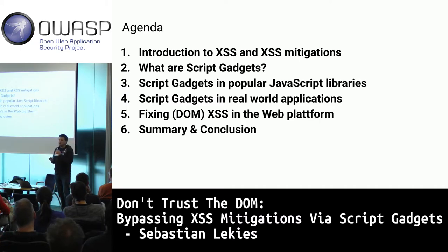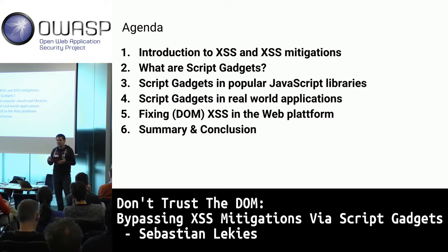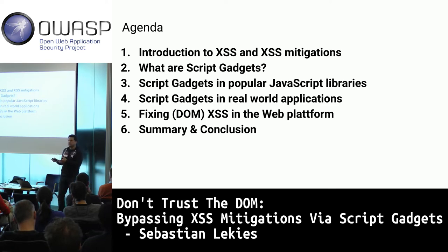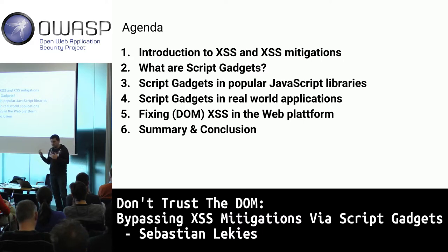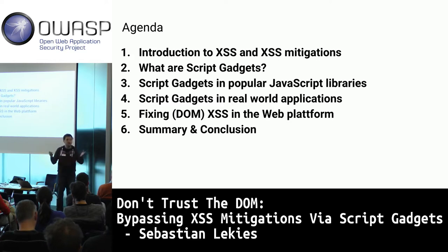We conducted a qualitative manual study on popular JavaScript libraries and frameworks to find these gadgets, and an automated study at scale on the Alexa top 5,000 websites. What we found is that gadgets allowing bypass of these mitigations are prevalent in almost all frameworks and applications.